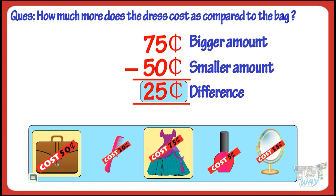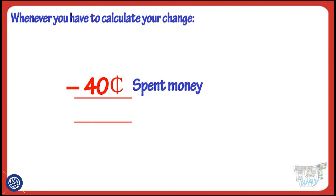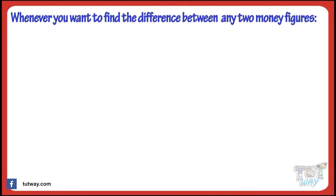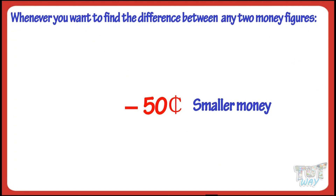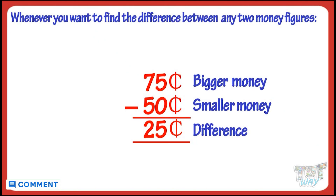So what have we learned? We have learned that whenever you have to calculate your change, subtract the money spent from the total money you started with. And whenever you want to find the difference between any two money figures, subtract the smaller money amount from the bigger money amount — the difference you get is the difference in cost between the two. Now, whenever you go shopping with your mom, keep an eye on how mom spends and calculate her change.